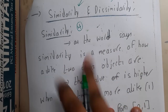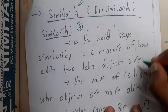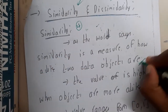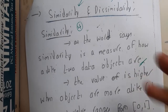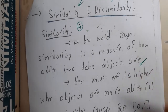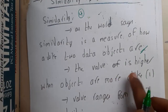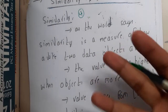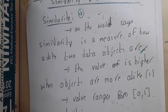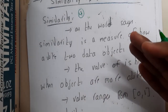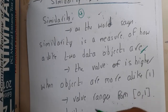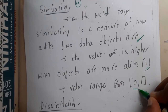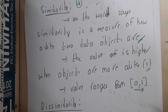Similarity is the measure of how alike two data objects are. I showed you with respect to pens or items; in the similar way if you are checking data objects, that is called similarity. If the value of similarity is higher, it means they are more similar or alike. The range is zero to one — if similarity is one they are 100% similar.